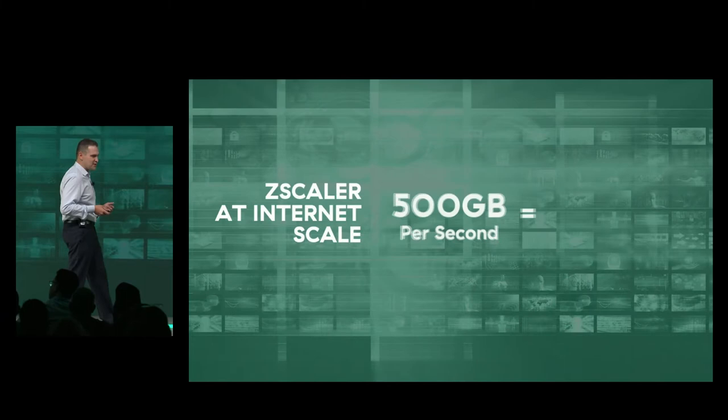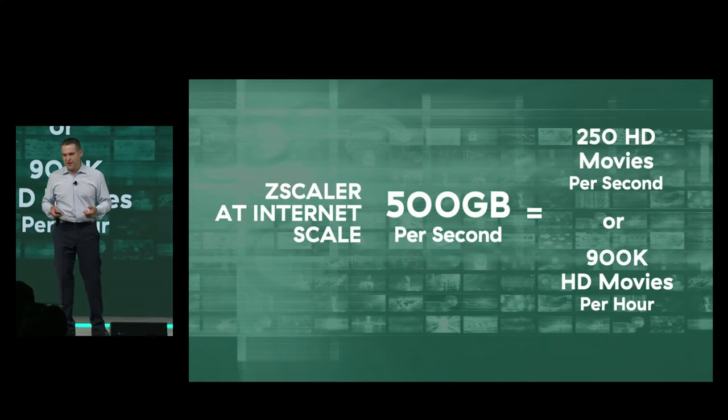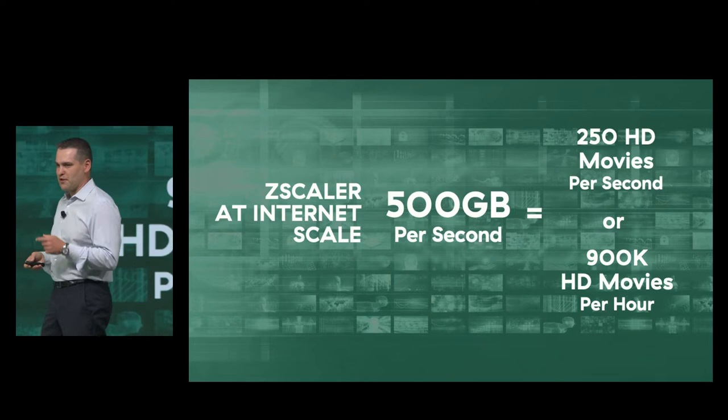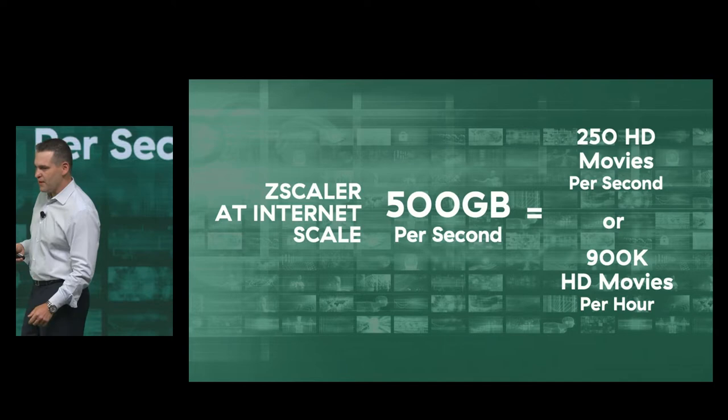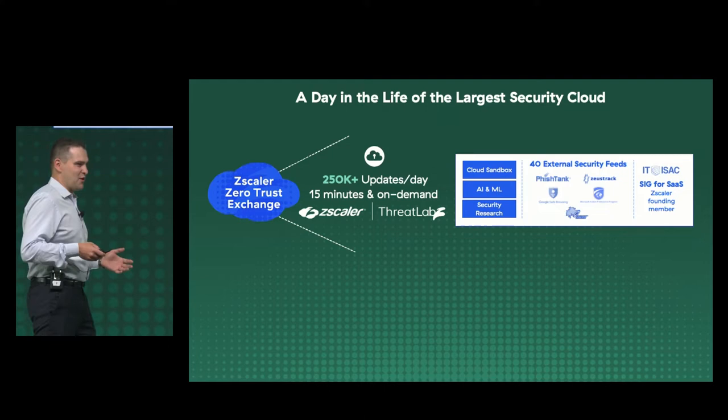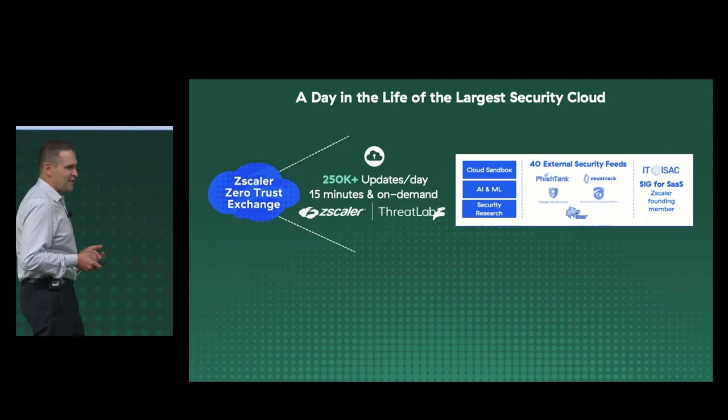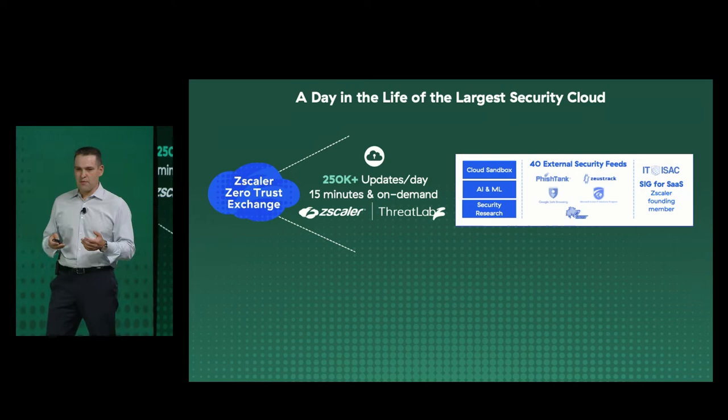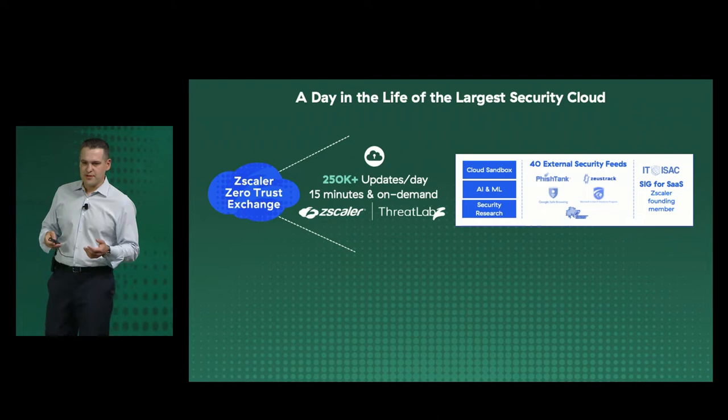For those of you that like bits and bytes: at any given moment, Zscaler processes about 500 gigabytes of data. That's about 250 HD movies watched concurrently in one second — 900,000 movies per hour. But Zscaler is not just a pipe; we actually process every bit and every byte that goes through the platform. On any given day, there are about 250,000 security updates that go to the system.